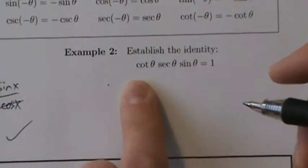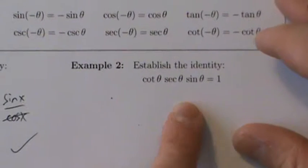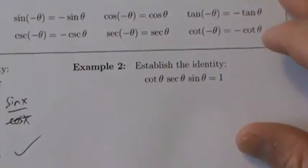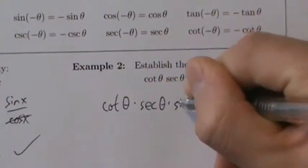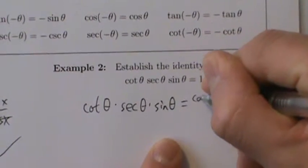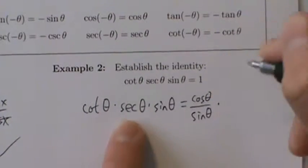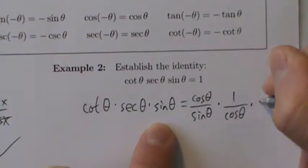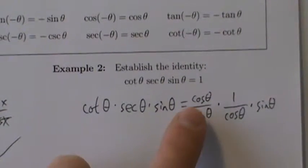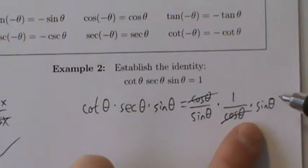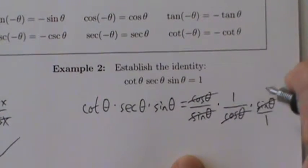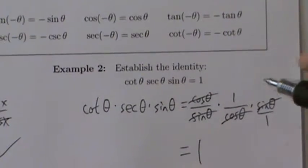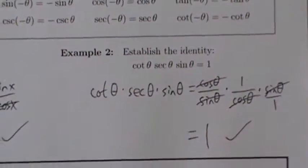Example 2: establish the identity. Starting on the left side, cotangent of theta times secant of theta times sine of theta. We rewrite in terms of sines and cosines: cotangent is cosine of theta divided by sine of theta, secant is 1 divided by cosine of theta, and sine of theta stays as sine of theta. The cosine of theta on top and bottom cancel. The sine of theta on the bottom cancels with the sine of theta on top, leaving just 1. That's what we wanted to show.